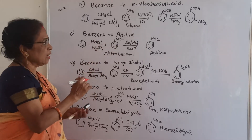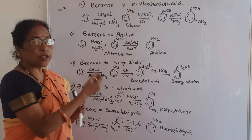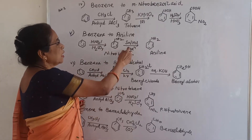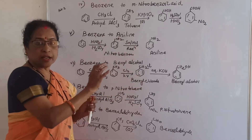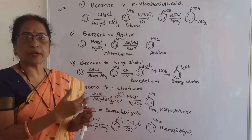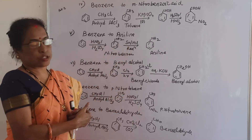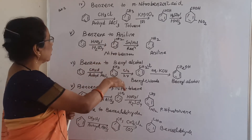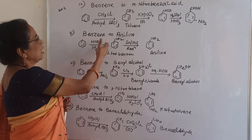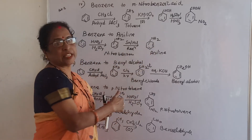Benzene to aniline: aniline has a benzene ring with NH2. To get NH2, if a NO2 group is present and treated with Sn/HCl reduction, NO2 changes to NH2. How do you get NO2 in the benzene ring? By treating benzene with concentrated HNO3 and H2SO4 — this gives nitrobenzene. Nitrobenzene with reduction using Sn/HCl gives aniline. This is a very important reaction.